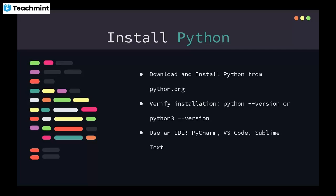We have seen how to set up Python — you download and install it from python.org. You can verify the installed version by typing 'python' or 'python --version'. You can use IDEs like PyCharm, VS Code, or Sublime Text, or simply write Python code in Notepad for starting purposes.